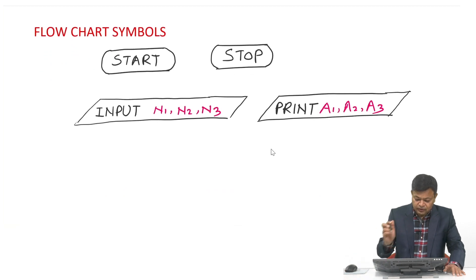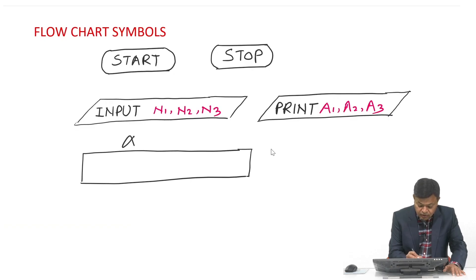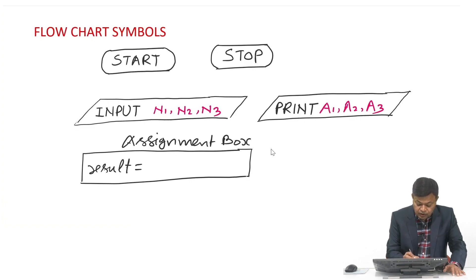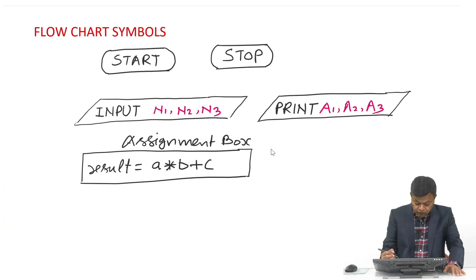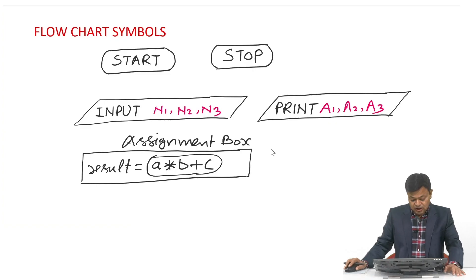When we have to do some calculation, we draw an assignment box, which is a rectangular box. For example, writing 'result = a × b + c' means the right-hand side expression is calculated first and the result is assigned to the left-hand side. This rectangular box is called the assignment box.